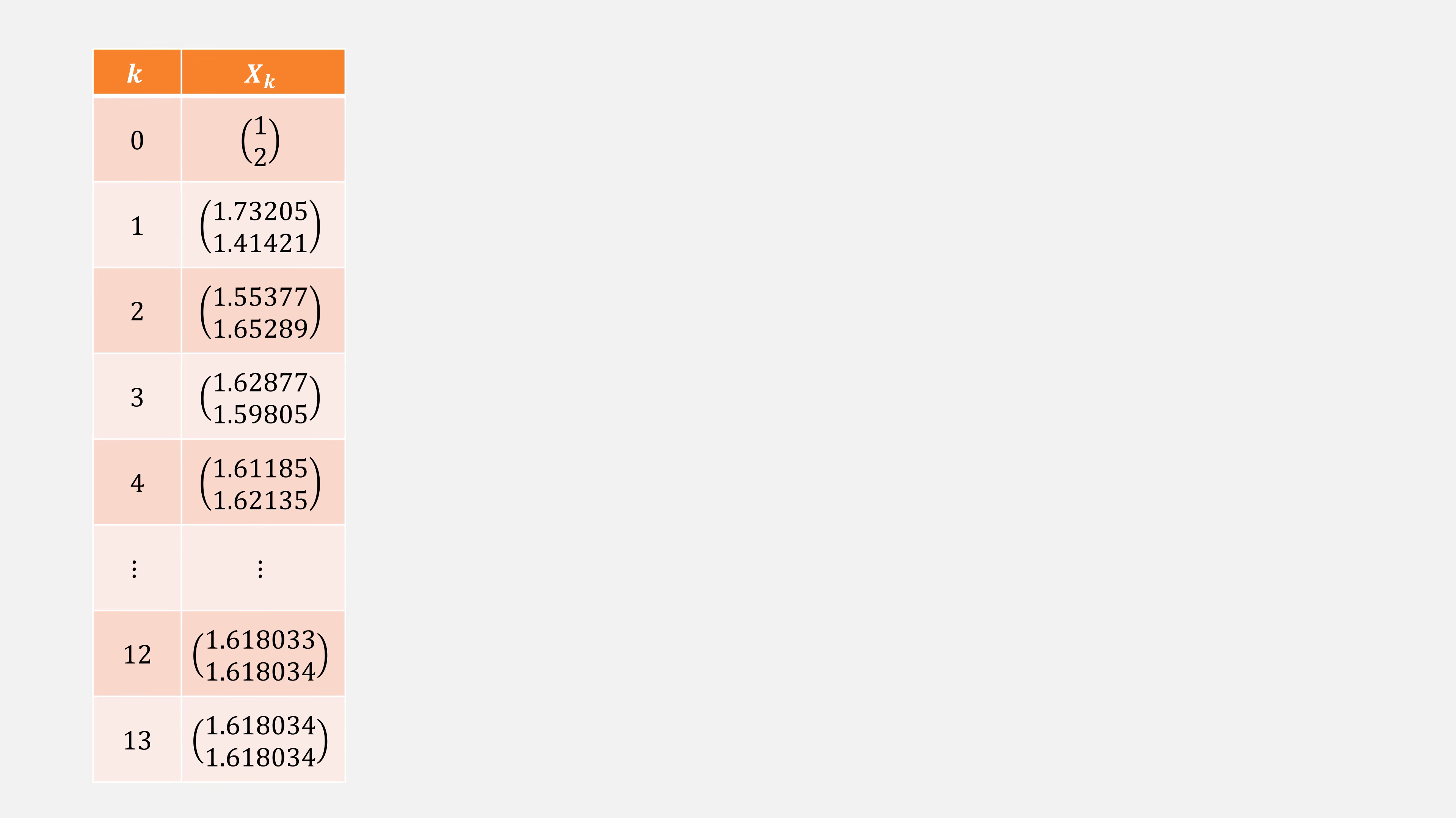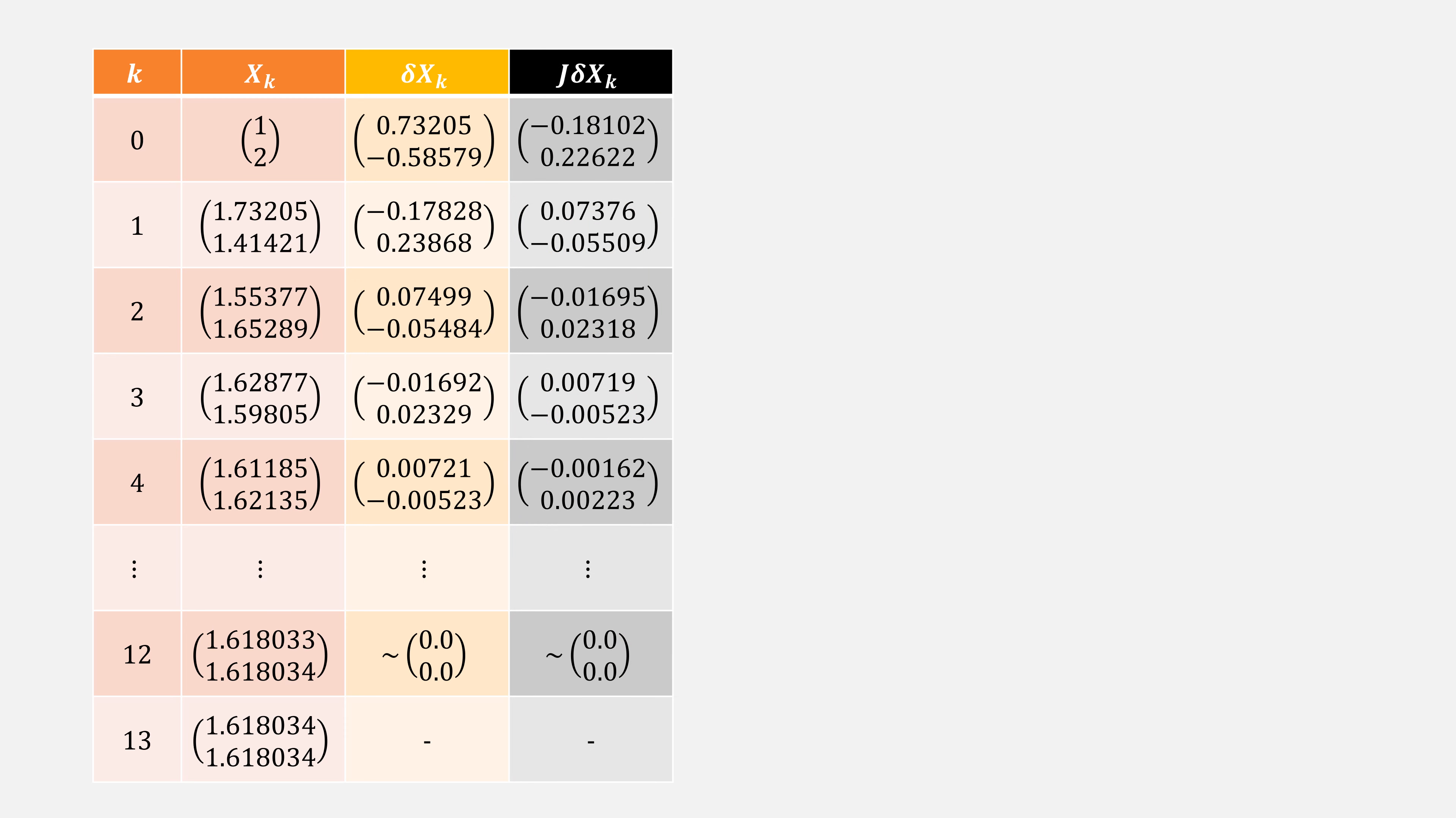If we use our same sequence from earlier and compute the little delta x, then multiply that times the Jacobian, we see that this approximation still holds. I'm switching to k here just to avoid confusion when we start doing n by n matrices.